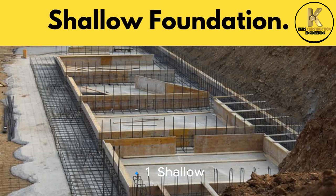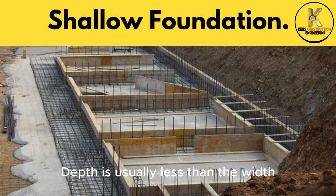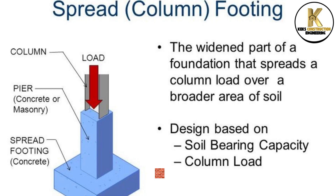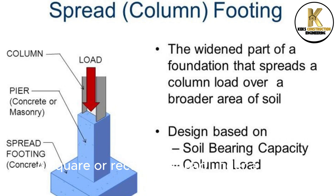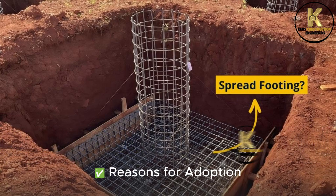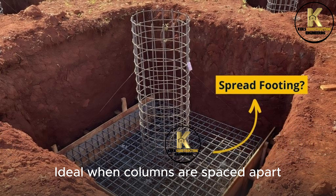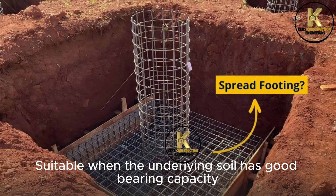Shallow foundations are used where the soil close to the surface has adequate bearing capacity, and their depth is usually less than their width. The spread footing, or isolated footing, is a square or rectangular pad under a single column. The load from the column is spread over a wider area of soil. It is economical for light structures, ideal when columns are spaced apart, and suitable when the underlying soil has good bearing capacity.